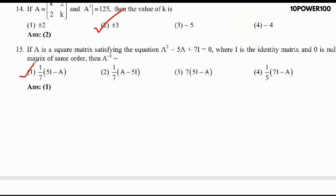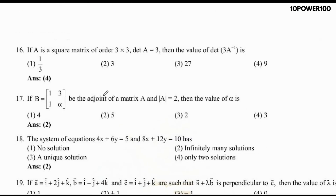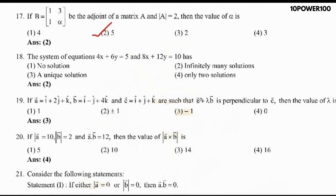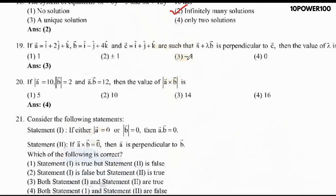Question number 14: option B is the right answer. Question number 15, based on matrix: option A is the right answer. Question number 16, based on determinants: option D, option 4, is the right answer. Question number 17: option 2 is the right answer. Question number 18, based on determinants: option 2 is the right answer. Question number 19: option 3. Question number 20: option 4.